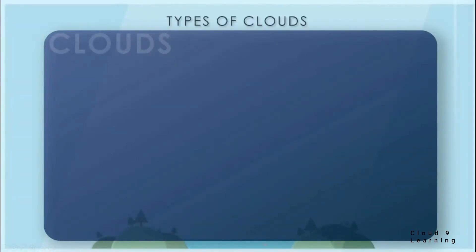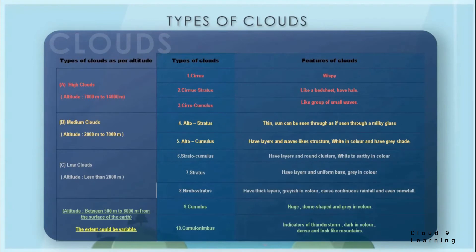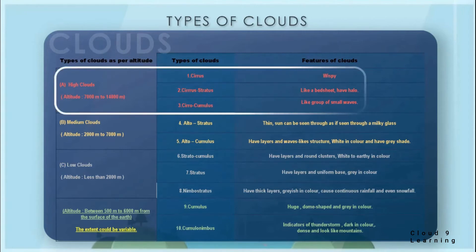Now we will study the types of clouds. As you can see in this chart, clouds are classified into high, medium and low depending on the altitude. These are further classified into 10 types depending upon their appearance and features. High clouds form at altitudes ranging from 7,000 to 14,000 meters. The types of high clouds are cirrus, cirrostratus and cirrocumulus.